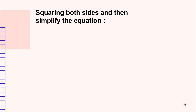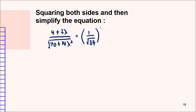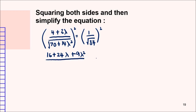Squaring both sides and simplifying, we get (4 + 3λ)² divided by (70 + 14λ²) equals 1 over 84. Expanding the numerator gives 16 + 24λ + 9λ² divided by (70 + 14λ²), and on the right-hand side we have 1 over 84.